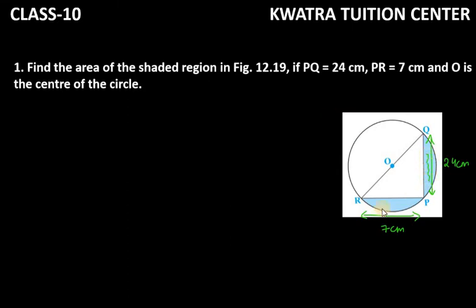To find the shaded portion, we need the area of the semicircle using the formula πr²/2, but we don't have the radius. First, note that angle QPR is 90 degrees because the angle in a semicircle is always 90 degrees, so we can apply Pythagoras theorem in triangle PRQ.